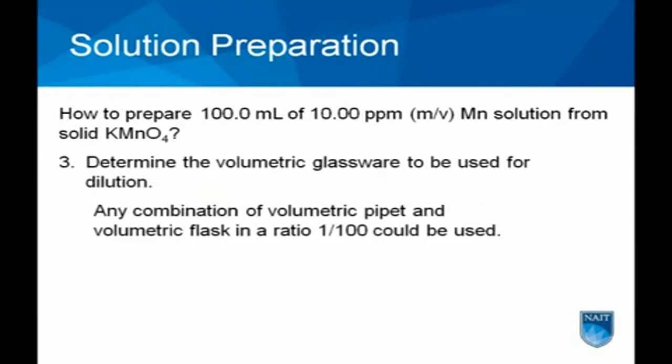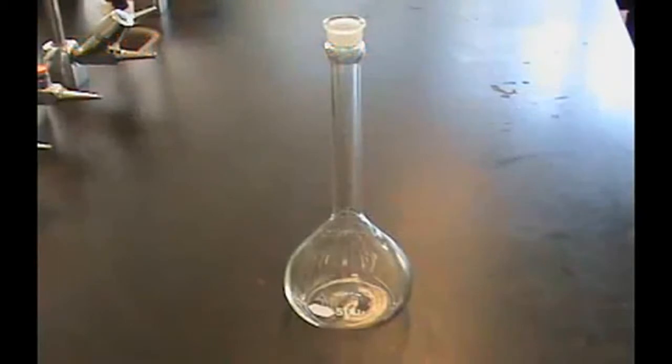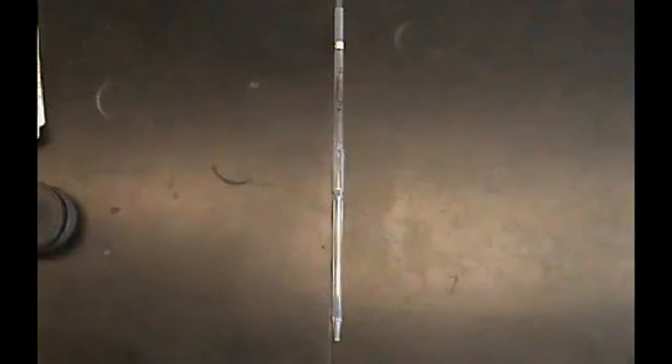To minimize solution waste with a slight increase in preparation error, a 500 milliliters volumetric flask and a 5 milliliters aliquot could also be used for the intermediate step in this procedure.